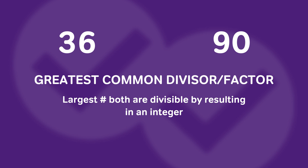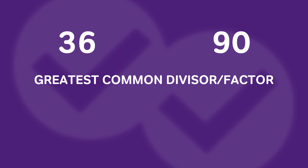To find the greatest common divisor or factor, we factor each number. Let's start with 36. When I factor even numbers, I divide by 2 — that gives me 18, then divide by 2 again to get 9, and 9 is 3 times 3. So 36 = 2 × 2 × 3 × 3. Those are the four prime factors that make up 36.